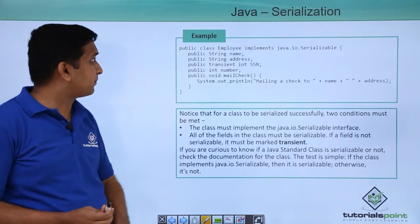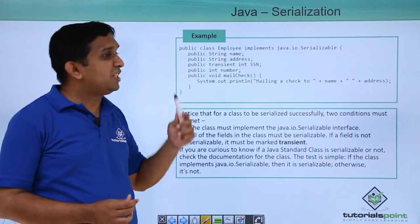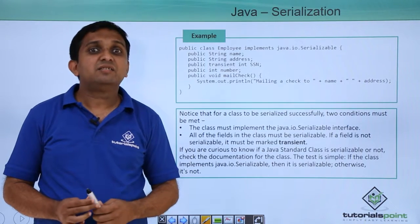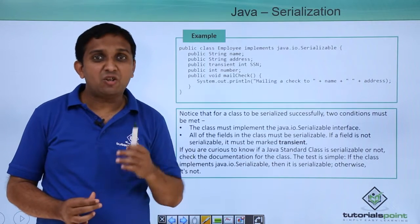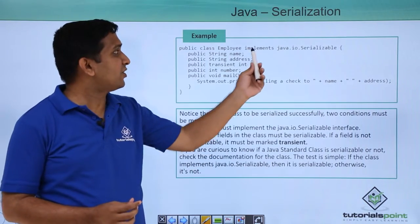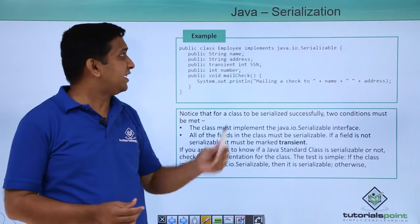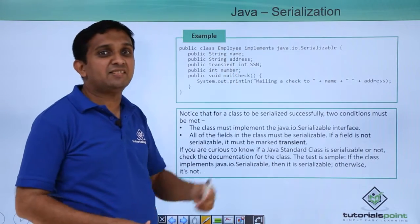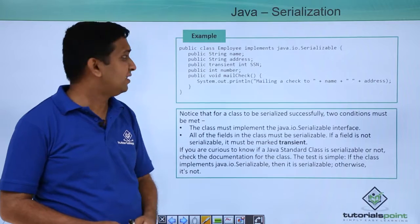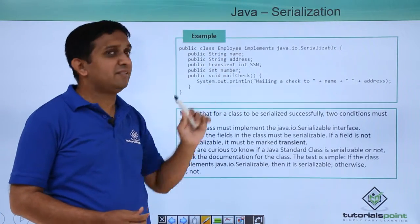When you serialize the object, you need to remember one important thing: the class whose object you want to serialize must implement the Serializable interface. Here the example shows an Employee class which is implementing the Serializable interface, and there are a few attributes in the Employee class along with some methods.